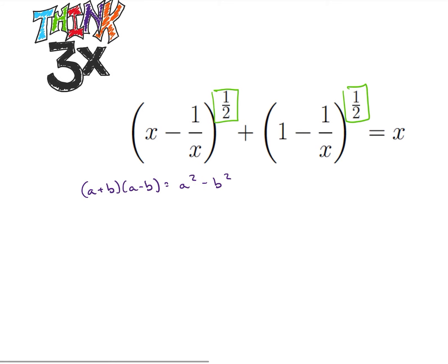Okay, so let's look at multiplying the left and the right side by x minus 1 over x to the 1 half minus 1 minus 1 over x to the 1 half. So if I multiply that whole thing by x minus 1 over x to the 1 half plus 1 minus 1 over x to the 1 half, then that's going to end up giving me x minus 1 over x square root squared plus 1 minus 1 over x, or sorry, minus 1 over x to the 1 half squared. It's the whole point.